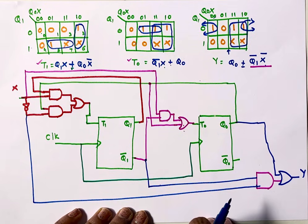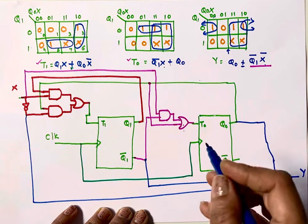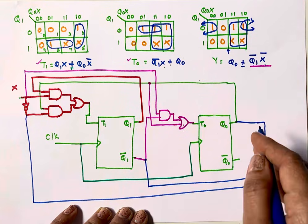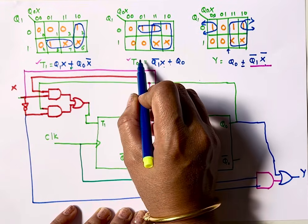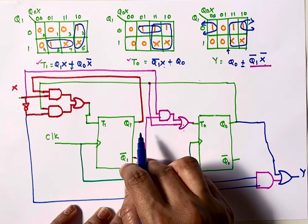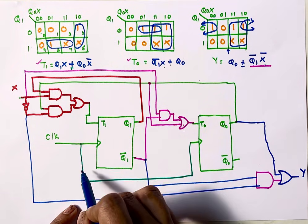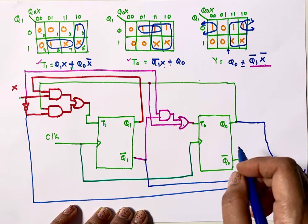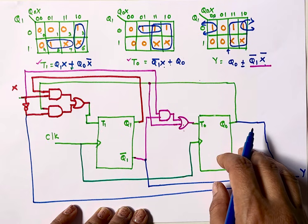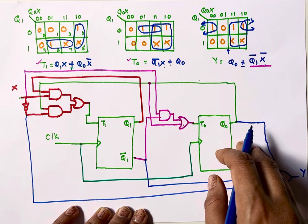This is the complete implementation of a clocked sequential circuit for the given state diagram using T flip-flops. To summarize: start with the state diagram, write the state table, use the excitation table to identify flip-flop input values, put those values into K-maps to get the equations, then implement the circuit. The key point is that a single external clock drives all flip-flops. Thank you for watching — please like, share with your friends, and subscribe to my channel.